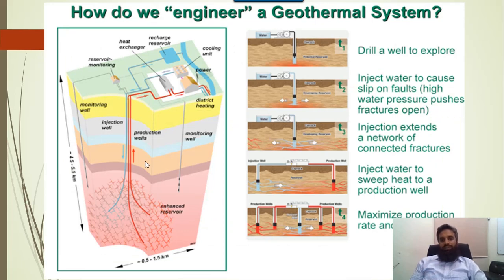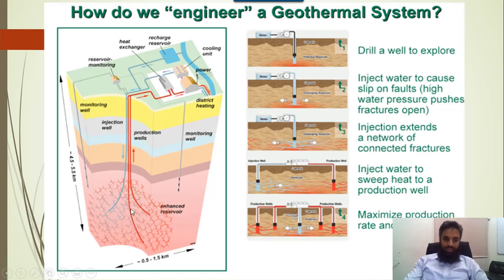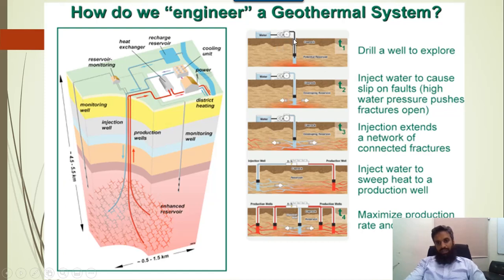This is the engineering of geothermal energy. The blue line represents the injection well and the red line is the production well. From the injection well we insert water, and from the production well the fluid travels to the power plant. The power plant includes a heat exchanger from which the power is generated. The injection well is where we drill down, and if we want extra heat, we can use multiple production wells.